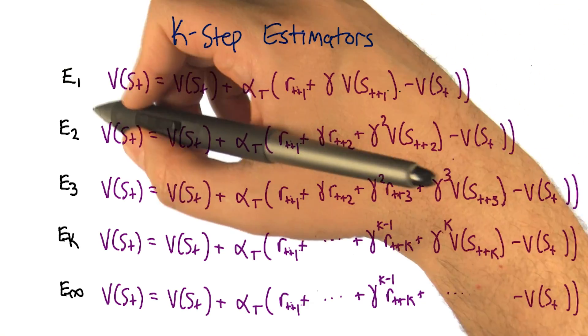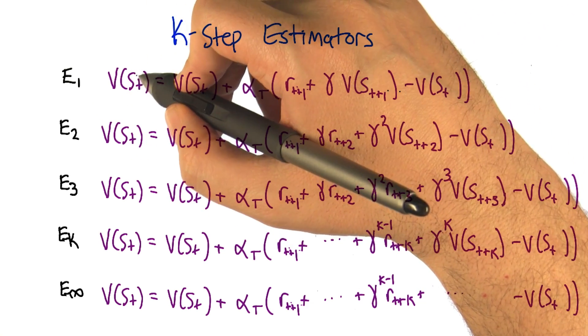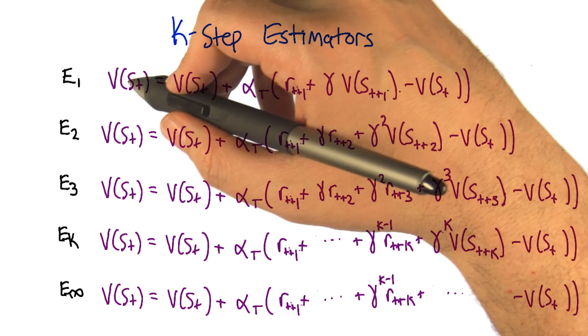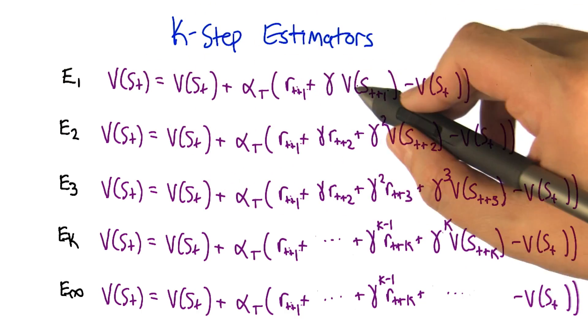So here's what a k-step estimator is. So let's say we're trying to estimate the value of a state, st, so it's a state that we just are leaving, as a function of what happens next.